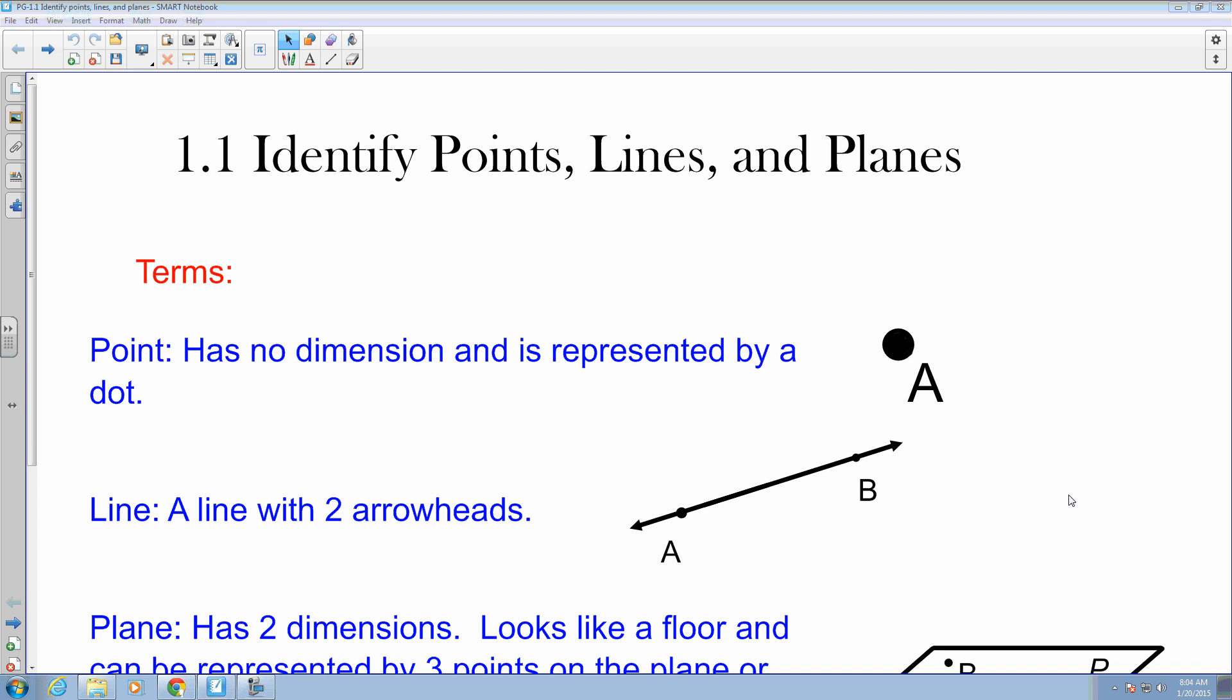Now, a point has no physical dimensions and it's represented by a dot, which we've seen before in previous classes.